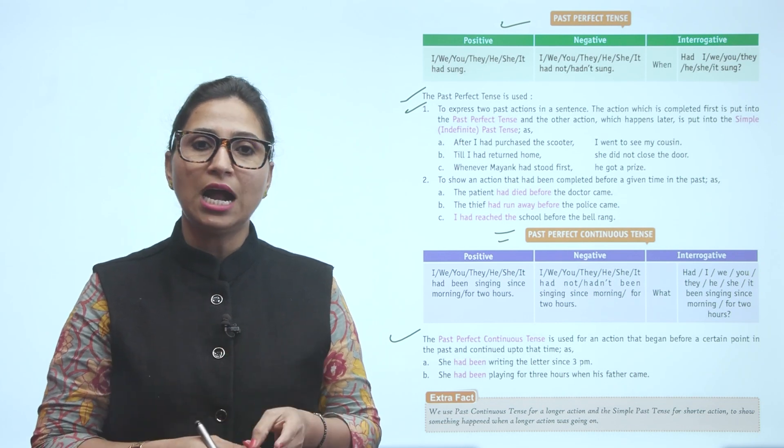'She had been writing the letter since 3 p.m.' 'She had been playing for three hours when his father came.' Extra fact: We use past continuous tense for a longer action and simple past tense for shorter action to show something happened when a longer action was going on.